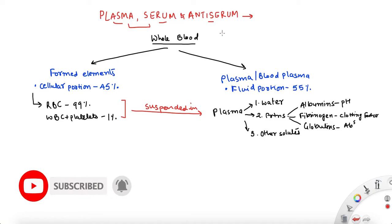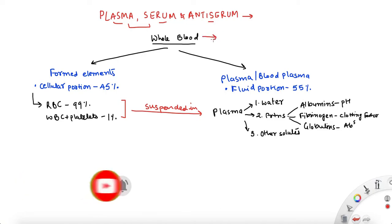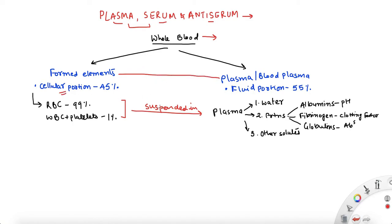To understand these terms, let's start with whole blood itself — the basic understanding of whole blood. When it comes to whole blood, it is made up of formed elements and a liquid portion. That means there is a solid cellular portion and there is a fluid portion in which those cells are suspended. The fluid portion is what we call plasma — a very crude definition.